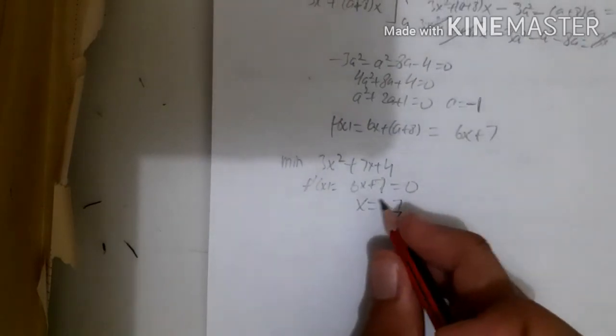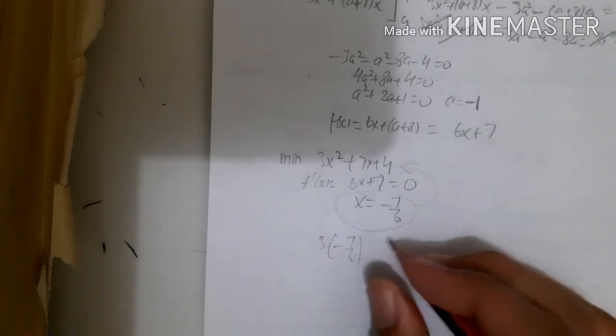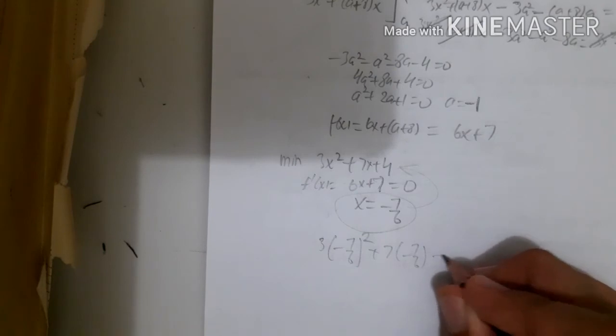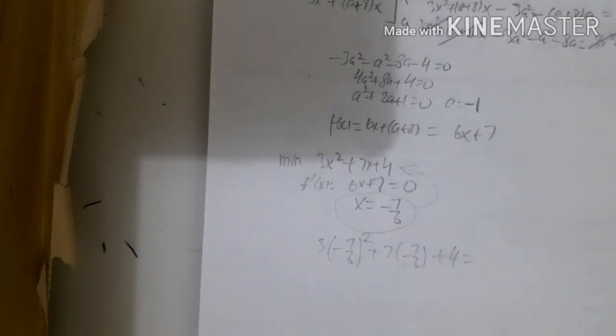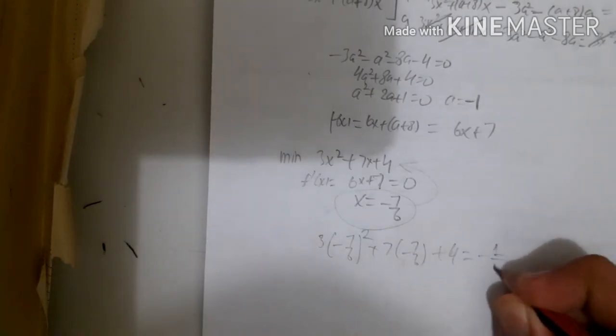And then from there we just have to substitute this into the function. So it is 3 times (-7/6)² plus 7 times (-7/6) plus 4. And we calculate the value of that, which is -1/12.